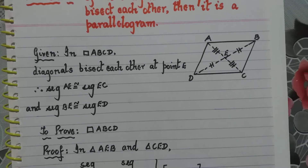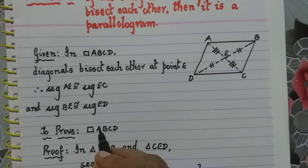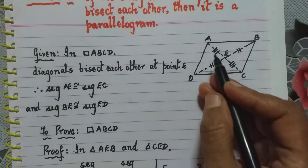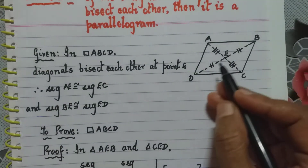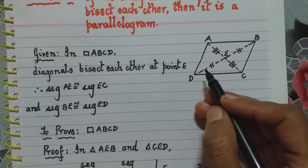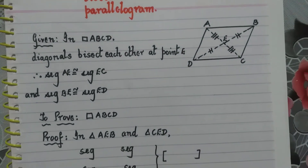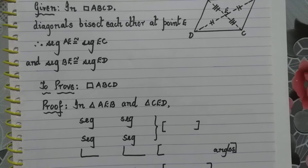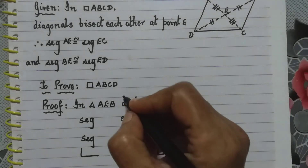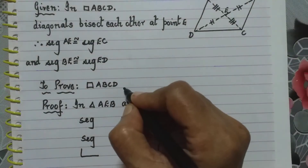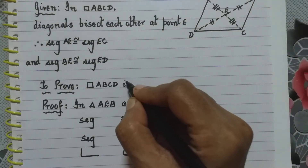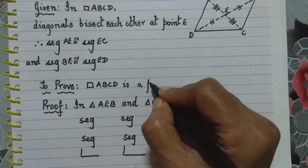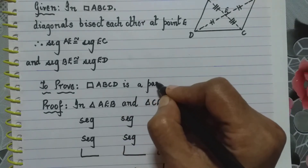Now, what have we to prove? We have to prove that this quadrilateral, which is given with diagonals bisecting each other, is a parallelogram. So we write — to prove: quadrilateral ABCD is a parallelogram.